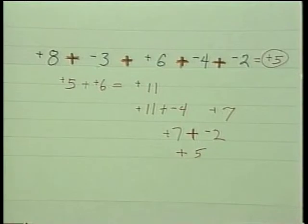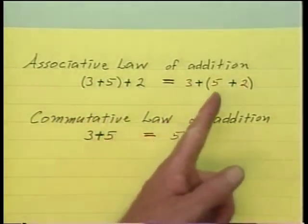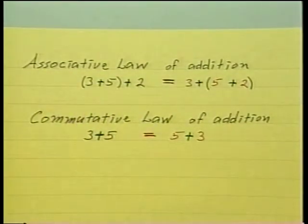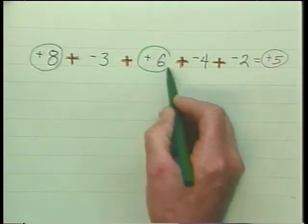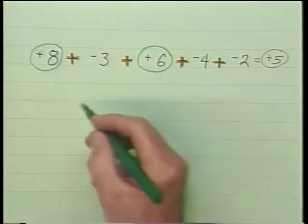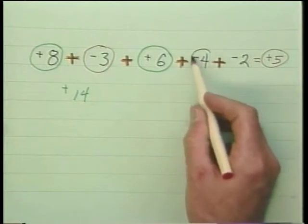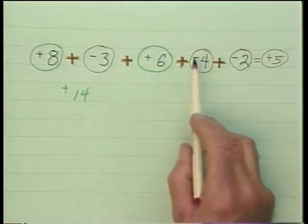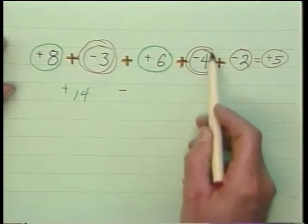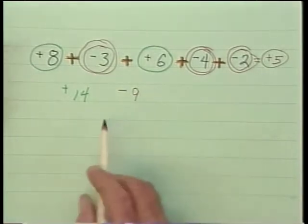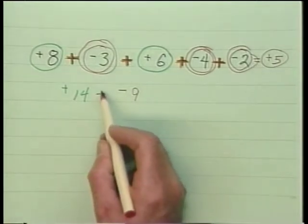So the sum of this long string of numbers is positive 5. That's a lot of work and a bit of bother — there's a shorter way. Through the use of the associative and commutative laws, which says if we're only adding throughout, I may add in any sequence I wish. So I identify the positive terms first — because they have like signs, I can just add their absolute values and keep the sign alike. Then I identify the negatives, and because they have like signs, I keep it like and add the absolute values: 3 plus 4 is 7, plus 2 is 9. So the positives gave me positive 14, the negatives added to negative 9.